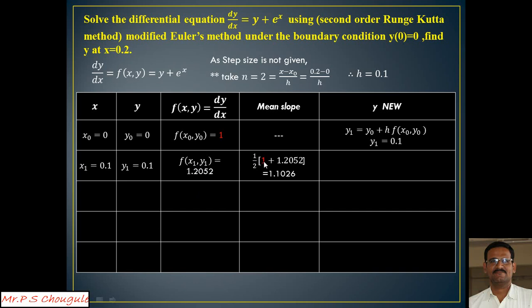The mean slope is (1 + 1.2050) / 2. I have taken the first value related to x0,y0 and the second value related to x1,y1, and by averaging them I get the mean slope of 1.1026. Now I can use the corrector formula: y1 = y0 + h × mean slope, which gives a better approximation of y1.